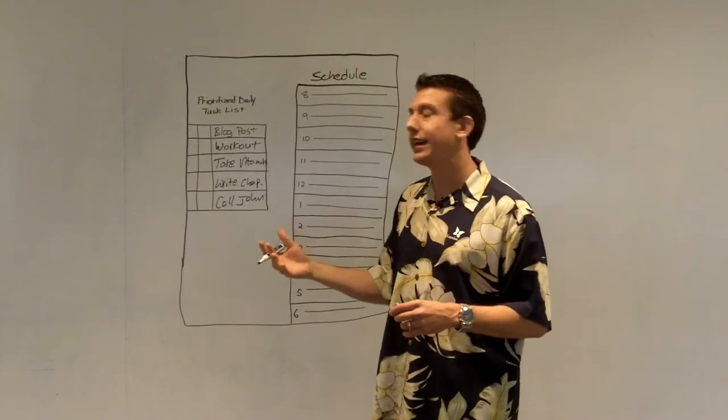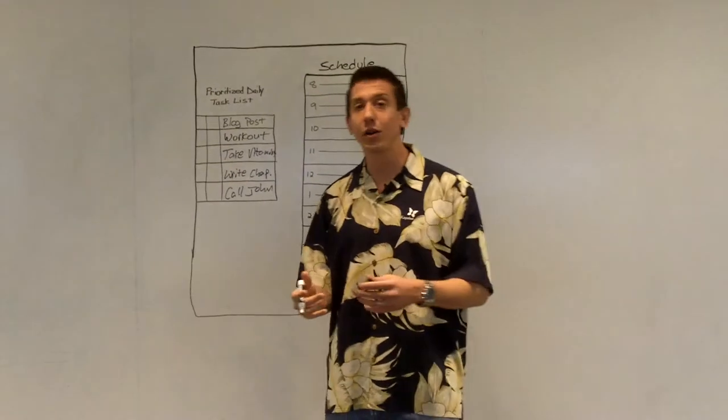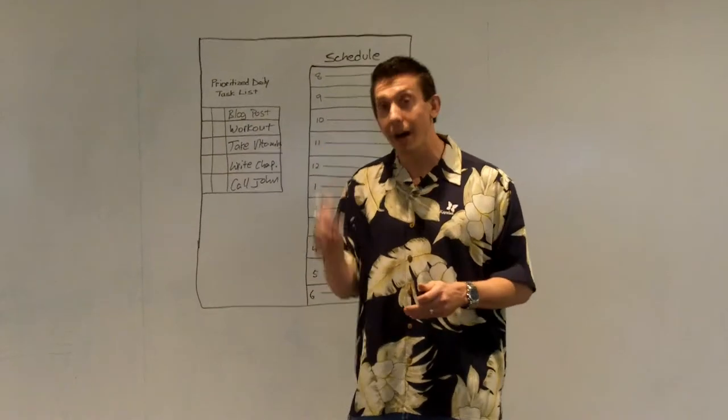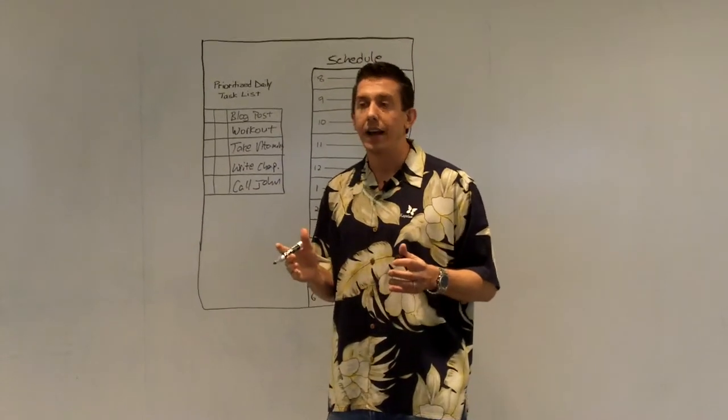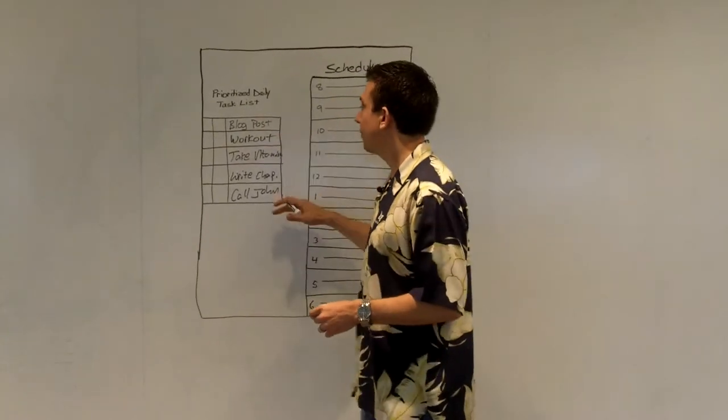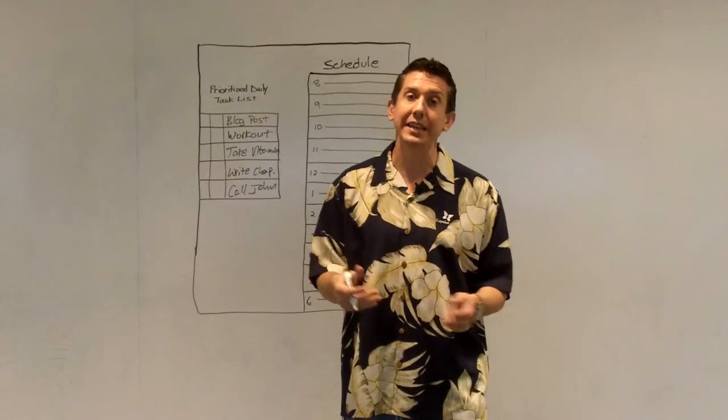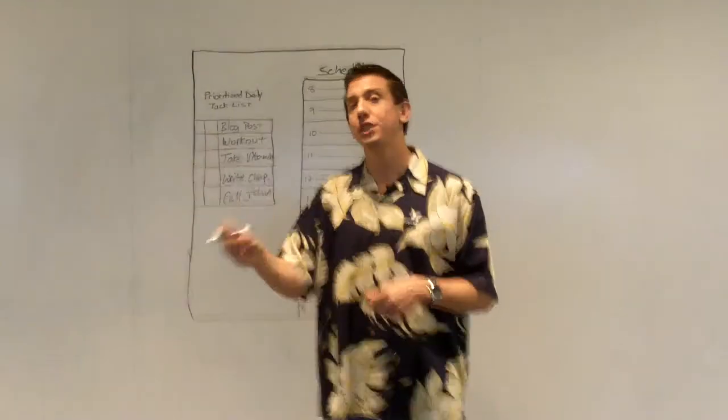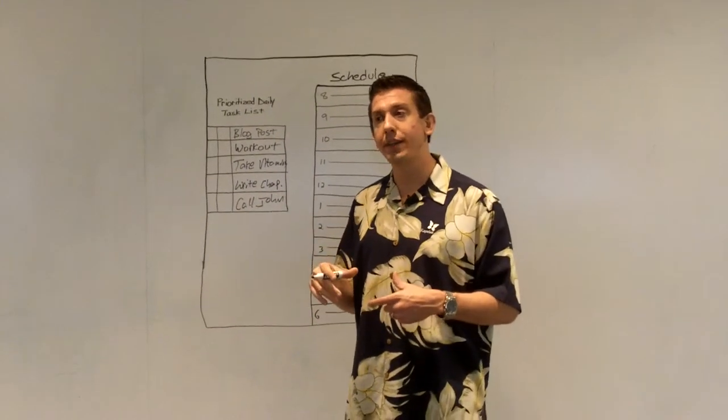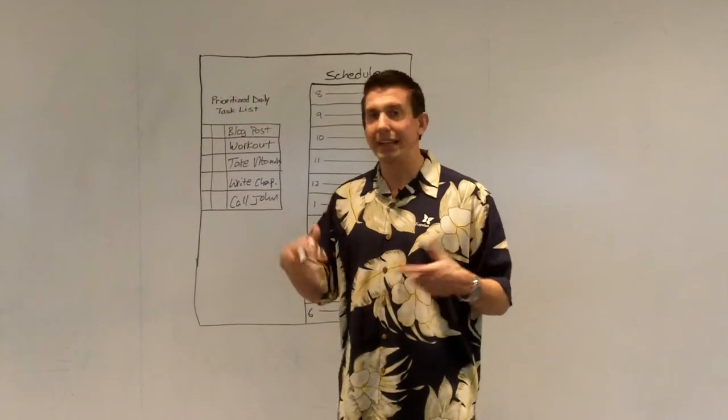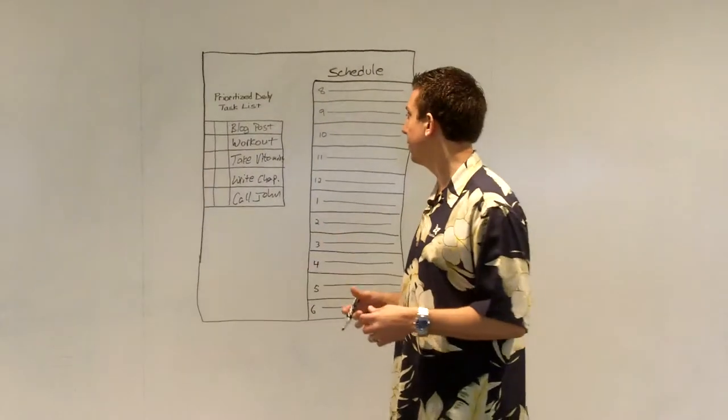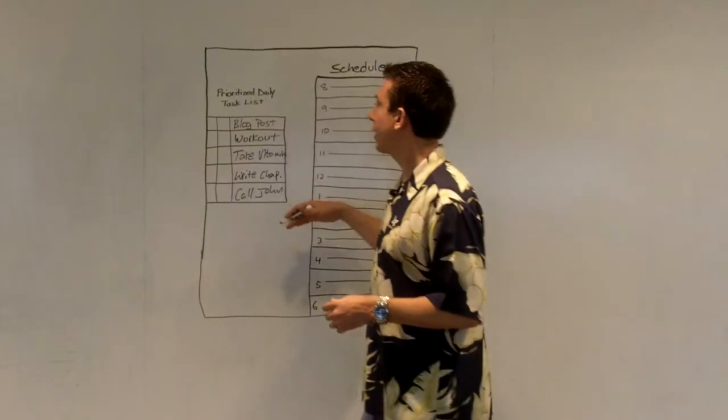So once I get everything that I know I need to do put on the task list, then I'll go through, and I will put a priority. And the way I do the priorities is an A, a B, or a C. And so it's basically like this. An A priority absolutely must get done tomorrow. It's something that's not a maybe or not a should. It's a must. I have to do it. Now, a B is something that really needs to be done, really should be done, but is not absolutely mandatory. And then a C priority item is something that is not going to really make a big deal one way or the other. It's not time critical or it's not going to be negative if I don't get it done.